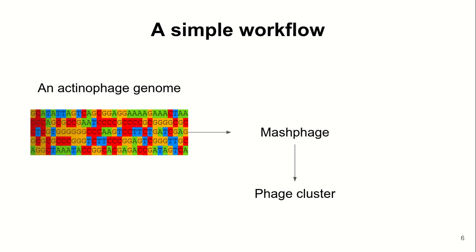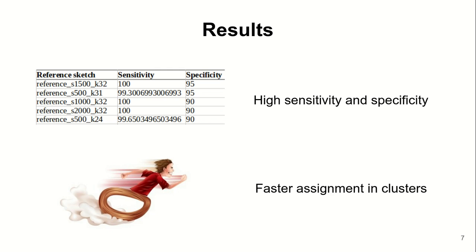Nevertheless, we have seen that depending on the size of the training set, these parameters can greatly vary. More investigation is ongoing to finalize this analysis, but results are promising as Mechphage was able to correctly assign more than 300 phage genomes in under 3 minutes. Mechphage is, to the best of our knowledge, the fastest method to assign actinobacteriophage genomes into clusters.